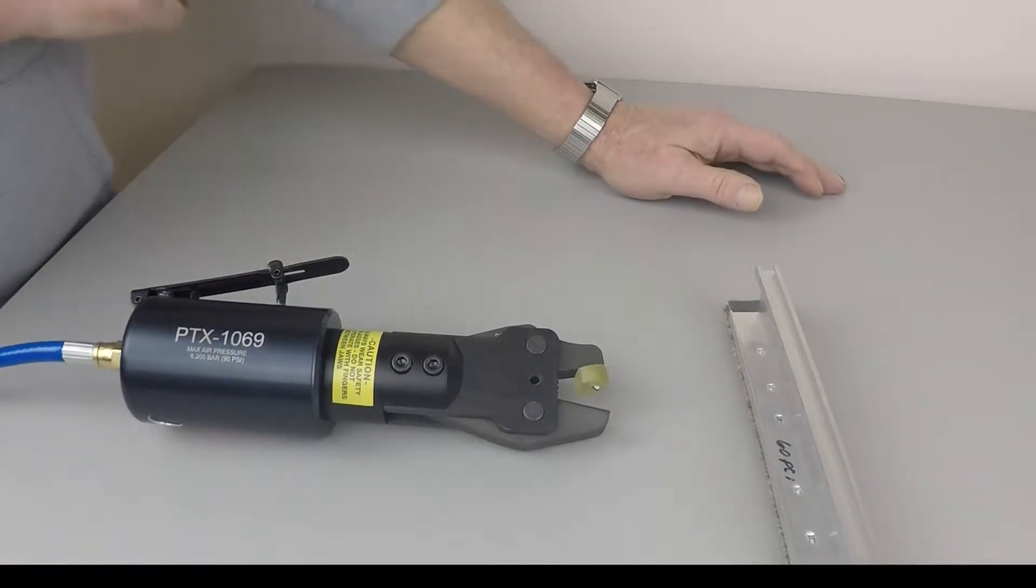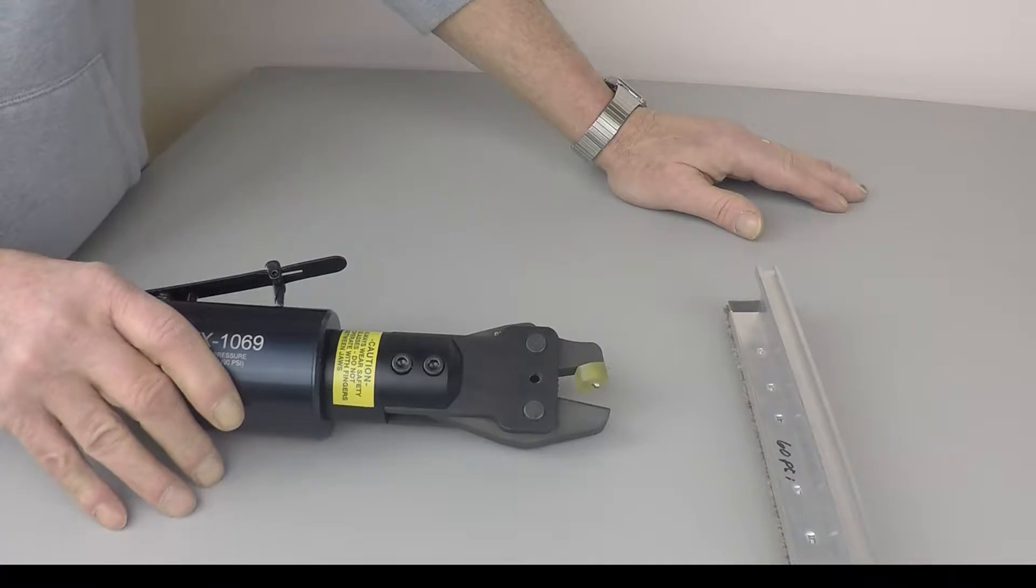We have a lot of applications where aluminum extrusions need to be punched or staked to hold a seal, like a weather strip or another type of seal in place.